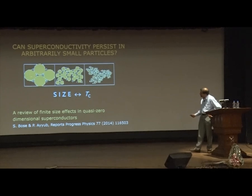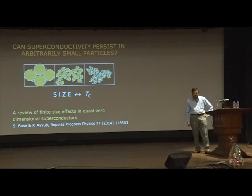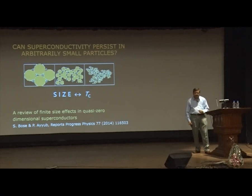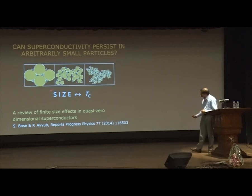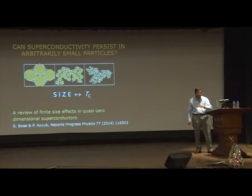The main question we are going to discuss is: can superconductivity persist in arbitrarily small particles? Almost any property — magnetism and others — gets drastically modified as you go down to small particles, and superconductivity is no exception. There is a very definite limit which shows where a superconducting particle should actually become non-superconducting, or where the superconducting ground state becomes destabilized as a function of particle size. A review of these finite size effects has recently been published.